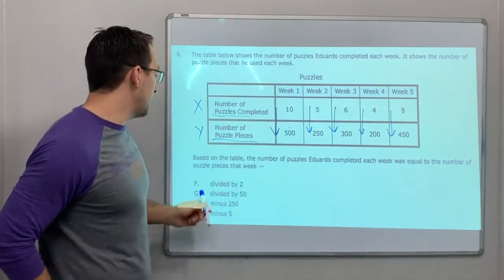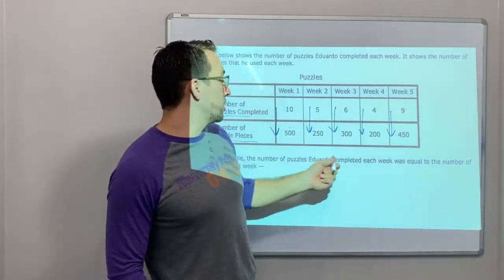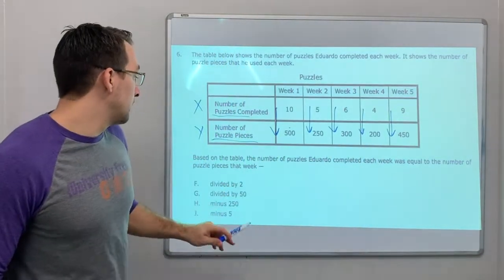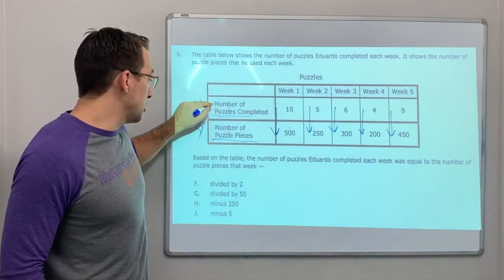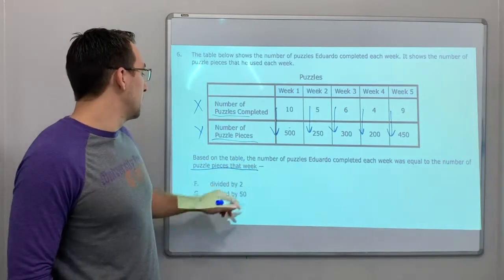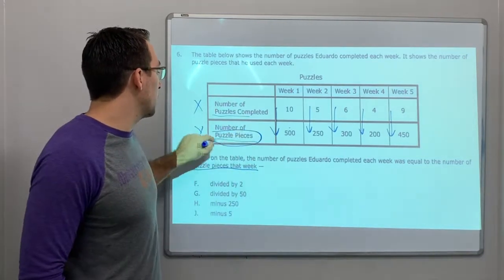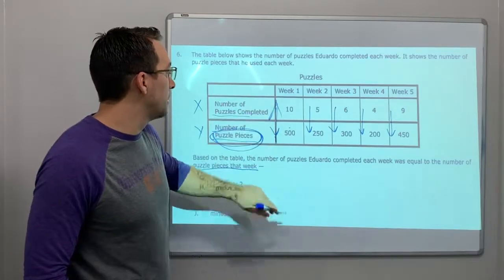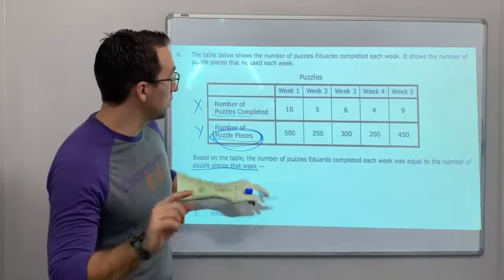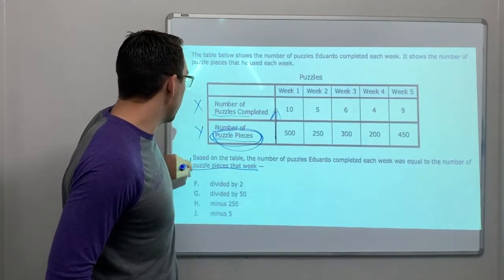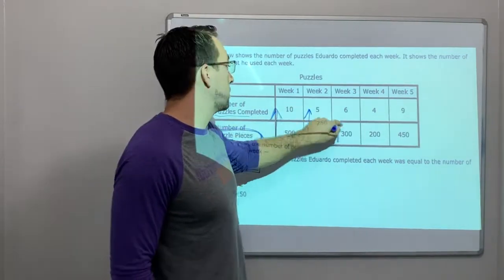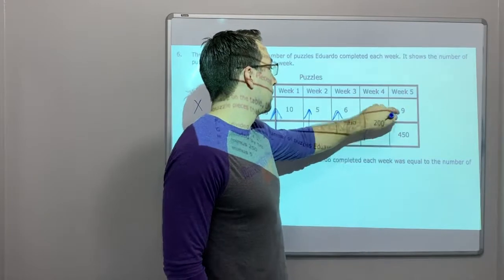10 times what is 50? Based on the table, the number of puzzles Eduardo completed each week was equal to the number of puzzle pieces that week. Puzzles, or the number of puzzle pieces that week. So puzzle pieces were starting with this number and so we're going up. We've got to listen. The number of puzzle pieces that week, and then we're going to the number of pieces.